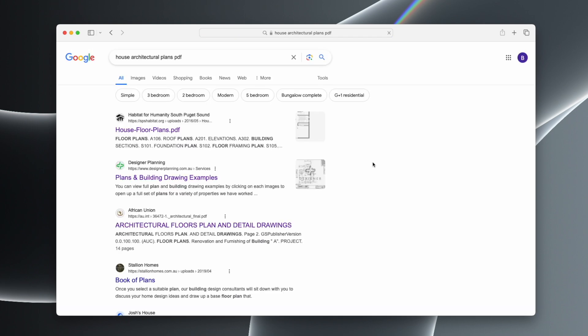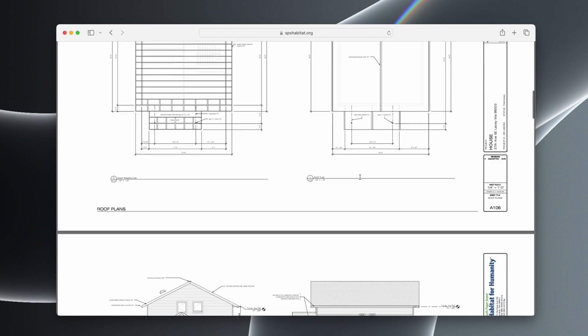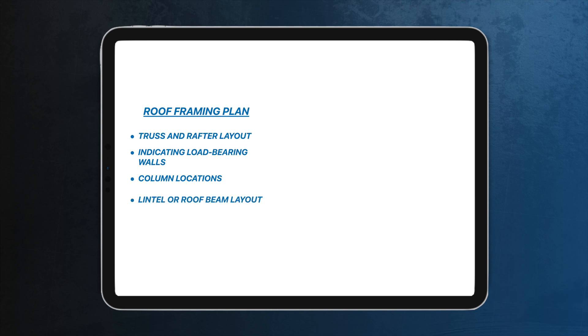To get started, you need to find a house floor plan — you can Google something like 'house architectural plans PDF' or take floor plans from real estate website ads. Once you've got the floor plans, you can start marking up the layouts. If you do a roof framing plan, the output would be the truss and rafter layout indicating load-bearing walls, where columns are needed, and where lintels or roof beams are required. For a floor framing plan, the output would be the joist layout, bearer positions, and any lintels or columns. The best resources are examples — search 'structural framing plan layouts' on Google Images, or watch basic framing videos on YouTube if you're brand new to this.